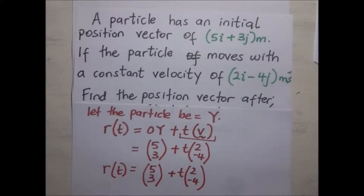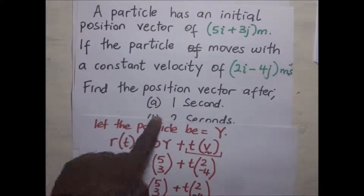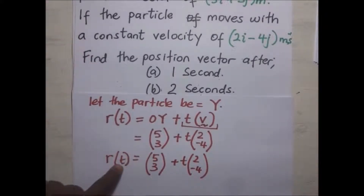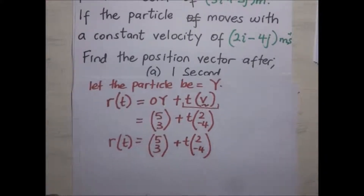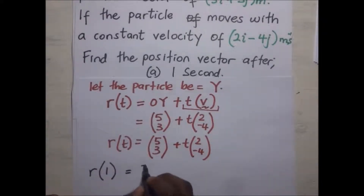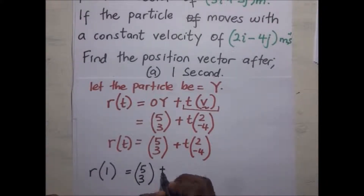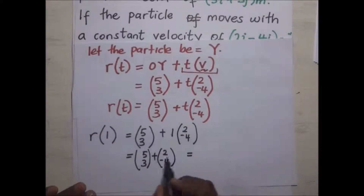This is the general expression for the position vector after any time t. Now the question asks us to find the position vector after one second, so we substitute t equals 1. r(1) is going to be [5, 3] plus 1 times [2, -4]. One times 2 is 2, and 1 times negative 4 is negative 4, so this becomes [5, 3] plus [2, -4]. We go ahead and add these vectors.